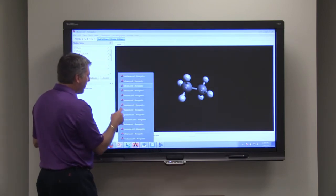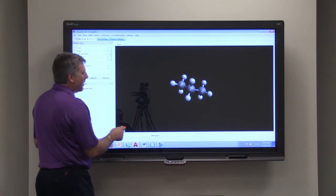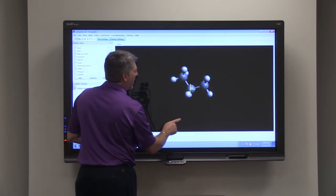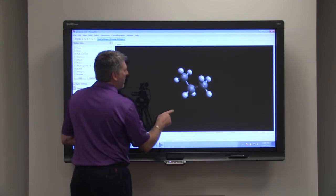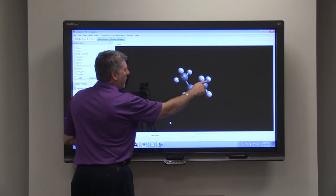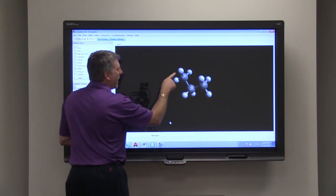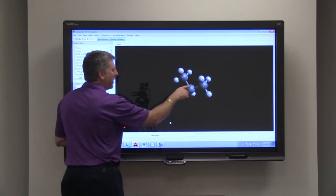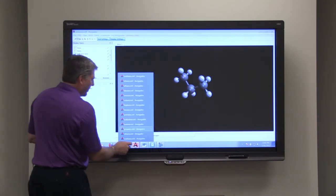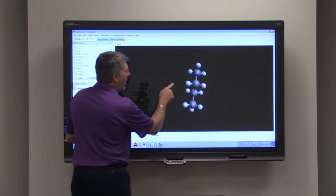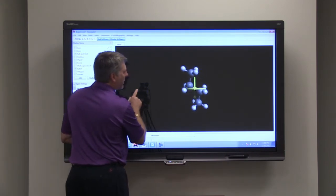If we look at propane, propane contains three carbons. So you can see one, two, three carbons. And then if we counted, we would count up eight hydrogens. One, two, three, four, five, six, seven, eight. So as we add carbons, our molecule gets longer.